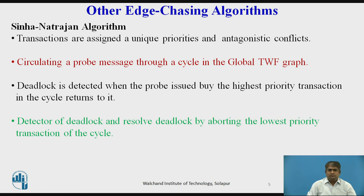The algorithm detects a deadlock by circulating a probe message through a cycle in the global wait-for graph. A probe message is a tuple (i, j) where Ti is the transaction that initiated deadlock detection and Tj is the transaction whose priority is the lowest among all transactions the probe has traversed so far. A deadlock is detected when a probe issued by the highest priority transaction in the cycle returns to it. Deadlock resolution is simple because the detector can resolve the deadlock by aborting the lowest priority transaction in the cycle.